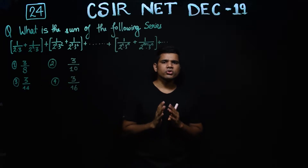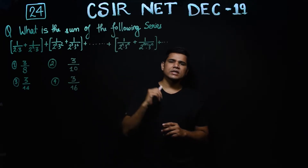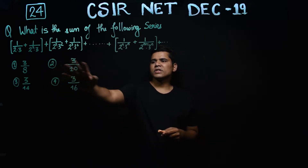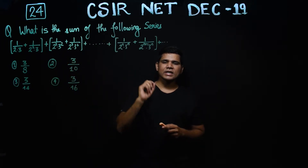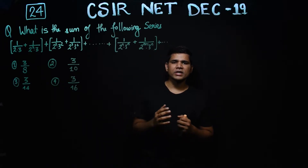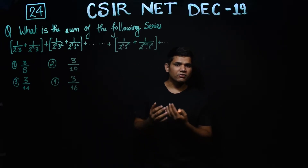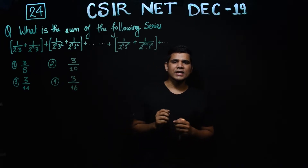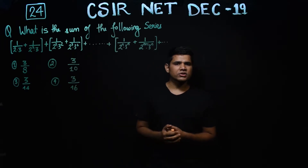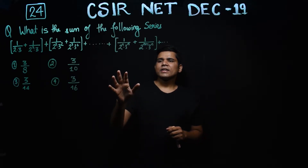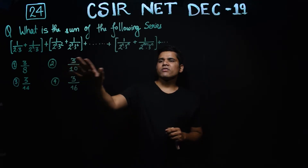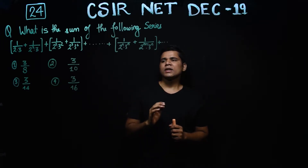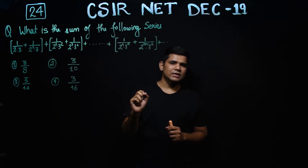The first thing that should come to your mind is whether this series converges or not. If you are not in an exam and you don't have these options, you need to check whether it converges, and if it converges then you can calculate the sum. Since there is no option saying the sum diverges or does not exist, you can directly evaluate the sum without checking convergence — the question is taking convergence as granted.